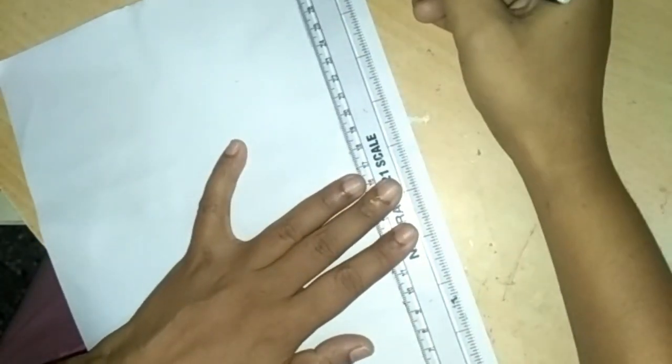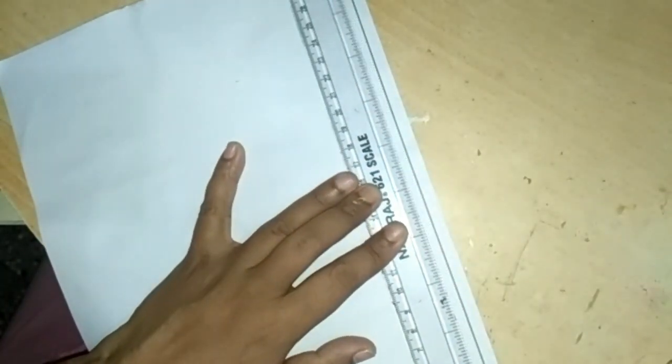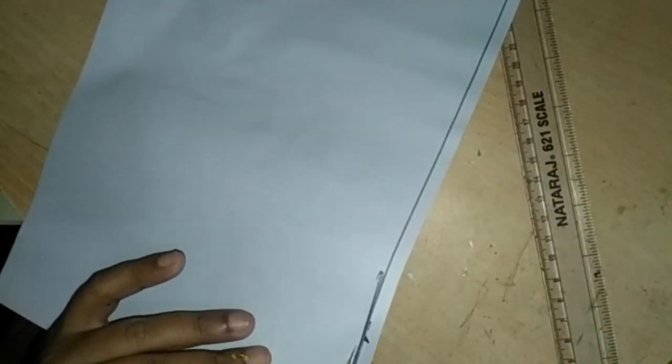If you don't have quilling paper, take any sheet, draw a line like this and cut it. Your quilling strips are ready now.